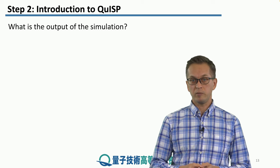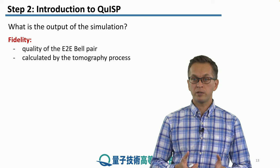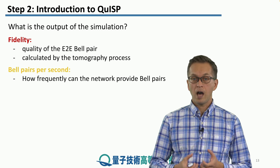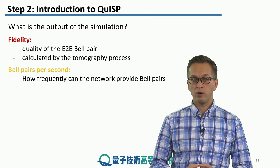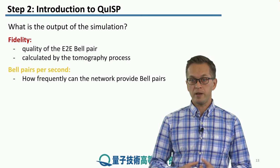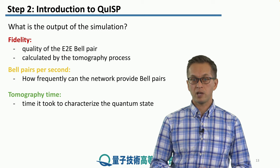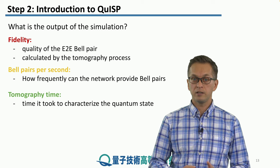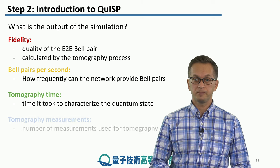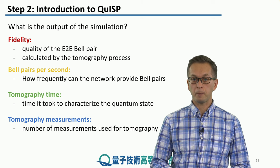Now, what is the output of the simulation? Often, we are interested in the fidelity of the end-to-end bell pair — how do all these errors affect the quality of such a state? — and that's calculated through the tomography process. How often can we distribute bell pairs per second? This is crucially important to applications. What is the tomography time? Tomography is a very resource-heavy process, so how much time does it actually consume? And also, how many measurements do we need to dedicate to find out what the state of the distributed pair is?